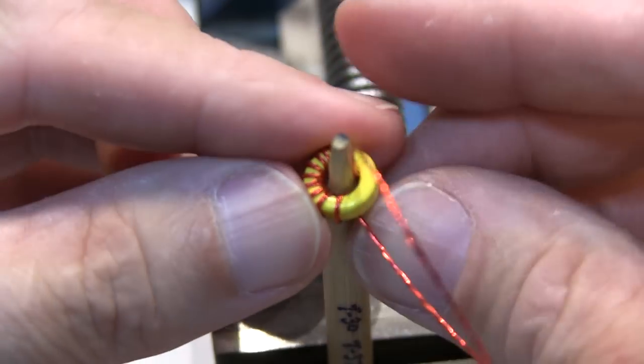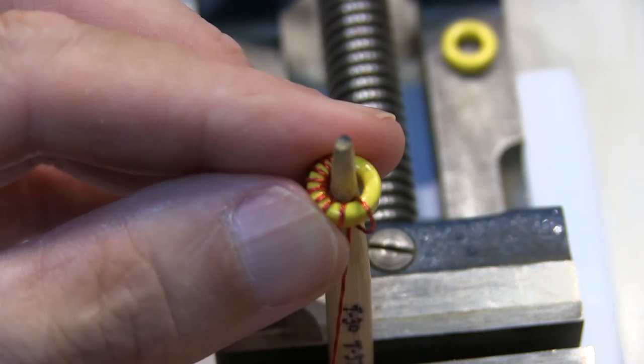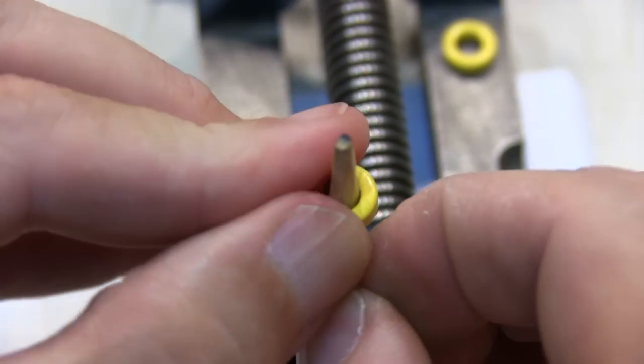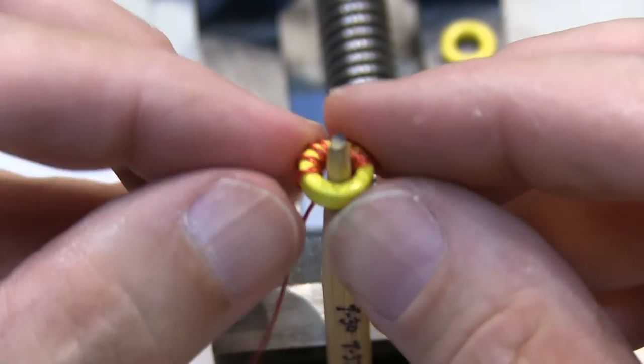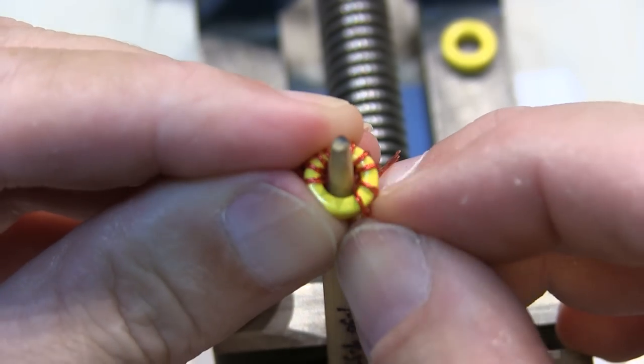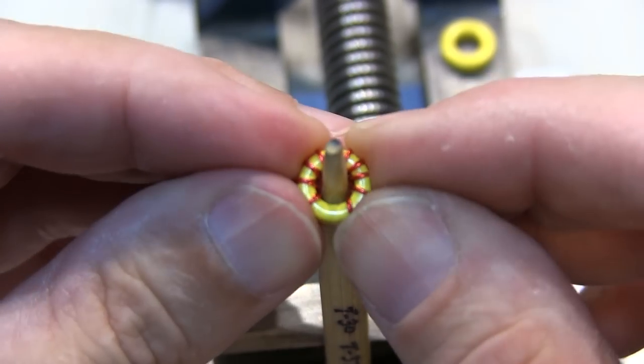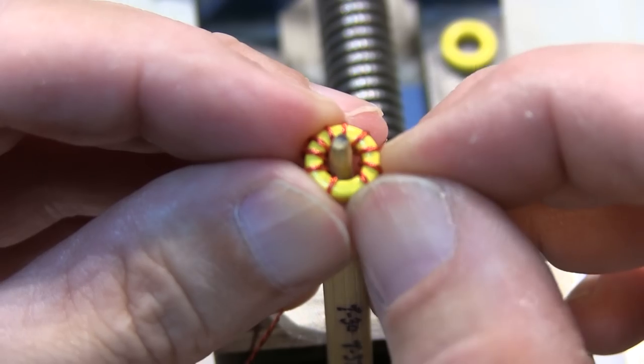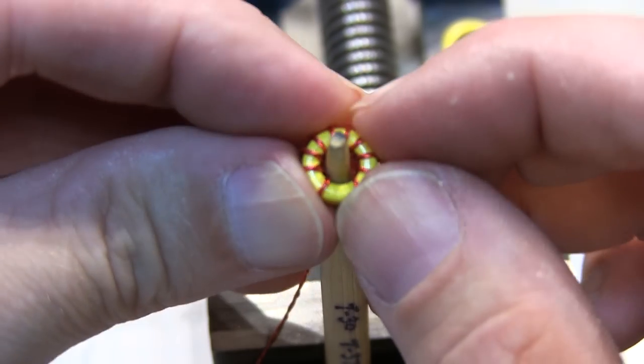Okay, so that is all 10 turns through the toroid. So we'll take this off and spread those turns a bit more evenly. And maybe leave about 30 degrees or so down at the bottom for mounting down on our circuit board.